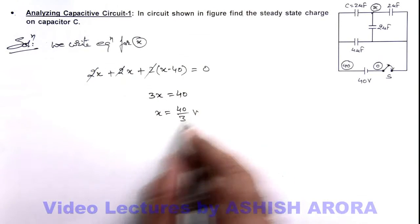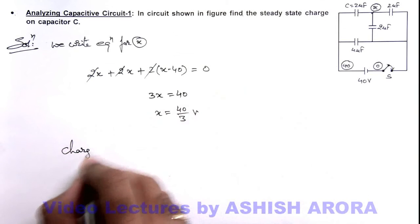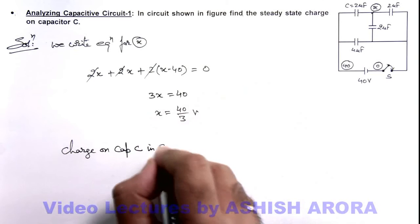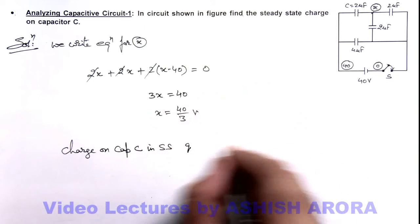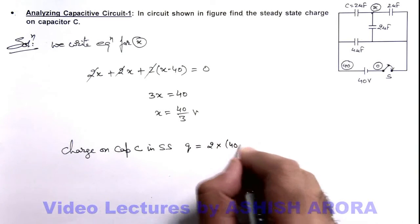So in this situation if we have got the value of x, we can find out the charge on capacitor C. In steady state it is always CV. So this is 2 micro farad multiplied by, this is 40 minus x.